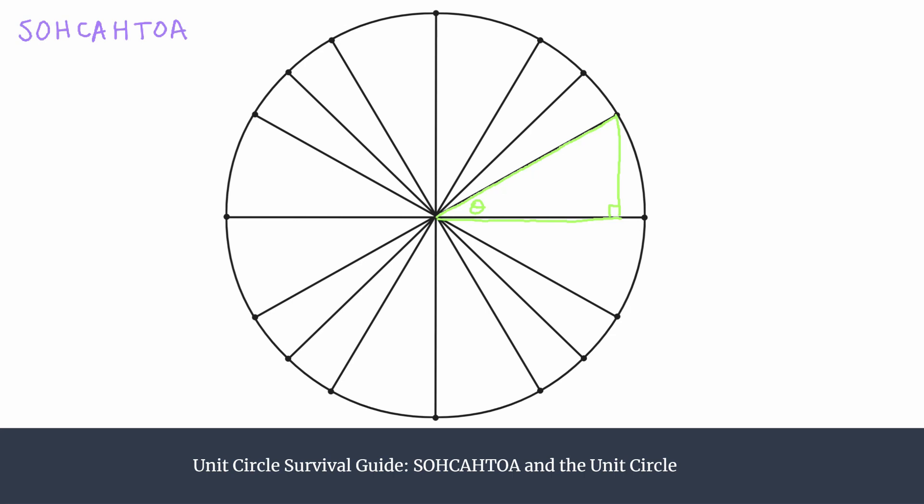We know a piece of information about this triangle already because we know this is a unit circle, which means each radius is one unit. So here's a radius highlighted in blue, and we know that that length must be one, and that's our hypotenuse of our triangle.